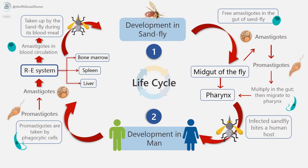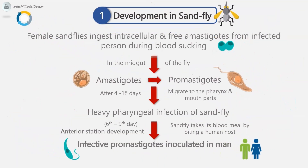Life cycle: The parasite passes its life cycle in two hosts — the amastigote form occurring in man (the vertebrate host) and the promastigote form in the sandfly (the insect host). Development in the sandfly (intermediate host): female sandflies ingest intracellular and free amastigotes from an infected person, or from dogs in certain areas like East Africa, during blood sucking. In the sandfly, amastigotes develop into promastigotes in the midgut within 72 hours, and promastigotes multiply rapidly to fill the lumen of the gut.